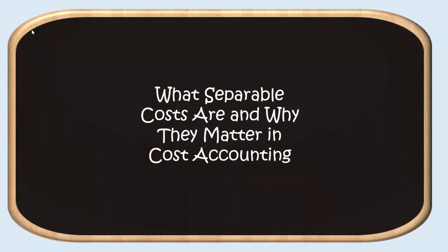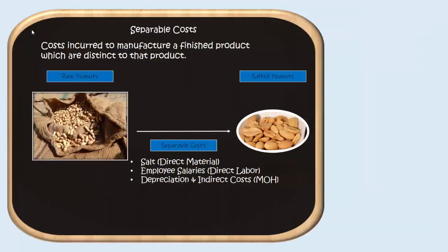What are separable costs and why do they matter in cost accounting? Separable costs are costs incurred after what they call the split-off point. They are costs incurred to manufacture a certain finished product which are distinct to that product.